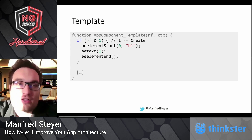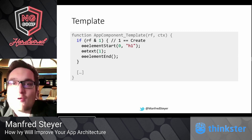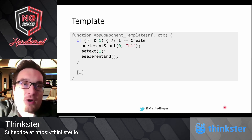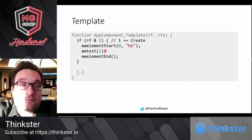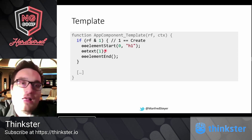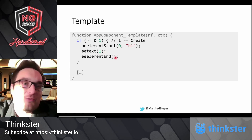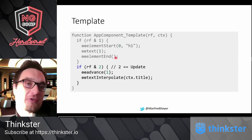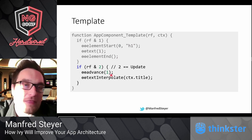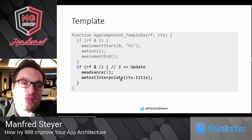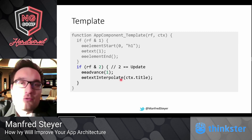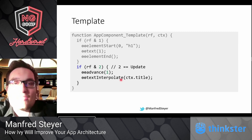The Ivy-generated code checks for the render flag. If it's one, we are in the creation phase: we create an element — here it's an h1 element — we create a placeholder, the placeholder gets the id 1, and of course we close the h1. Back in phase two, the update phase, we jump to the element with id 1 and interpolate the title. The title is written into the placeholder, and that's basically what Ivy is doing behind the curtains.